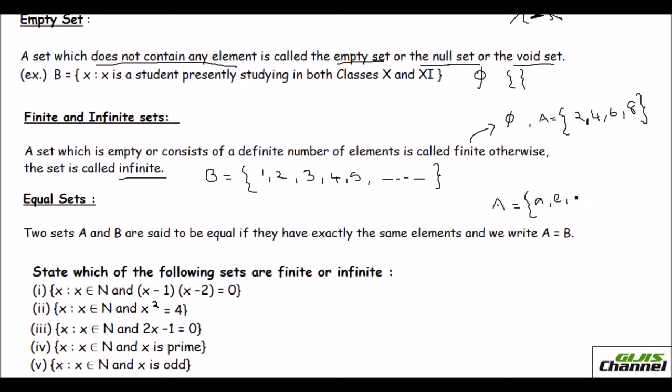And the last one is equal sets. You can call two sets are equal only when they have exactly the same elements. Say for instance A equals A, E, I, O, U. And then I say B equals I, A, O, E, U. Even though they are not in the same order, since the elements are all the same, the number of elements and the nature of the element is same. In that case, these two sets are equal sets. A is equal to B.